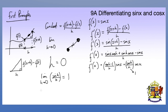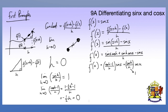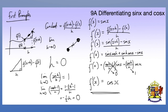For cos h minus 1 over h: cos h equals 1 minus one-half h squared using our small angle approximation, so cos h minus 1 equals negative one-half h squared. Dividing by h gives negative one-half h, and as h tends towards 0, this tends towards 0 as well. So cos h minus 1 over h becomes 0, that term disappears, and we're left just with cos x. So if we start with sine x, differentiating gives us cos x.